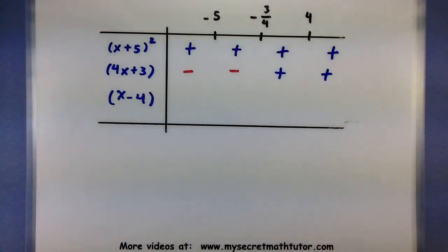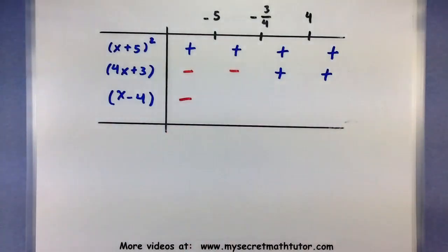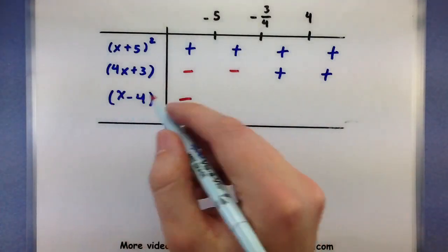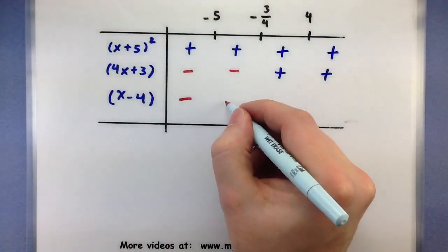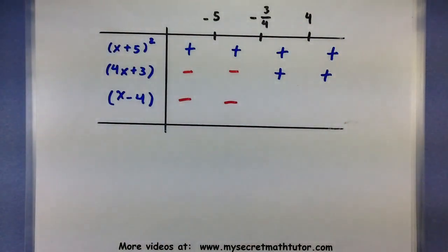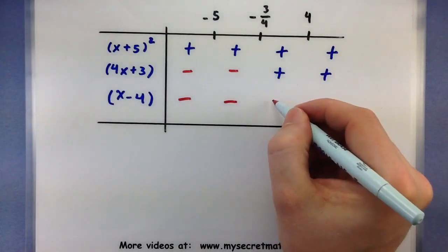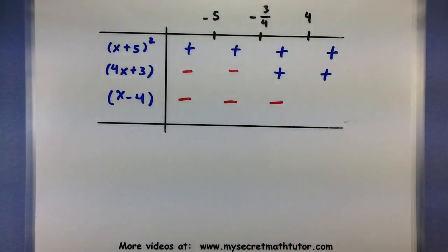On to the last factor, x minus 4. Something less than negative 5, minus 4 — still negative. Something between negative 5 and negative 3 quarters, like negative 1, minus 4 — still negative. Between negative 3 quarters and 4 — still negative. And anything greater than 4 — now it's finally positive.